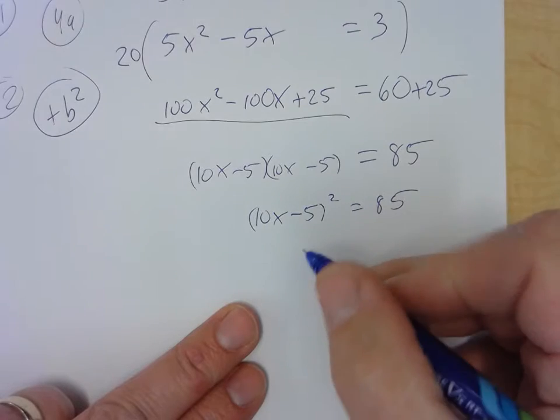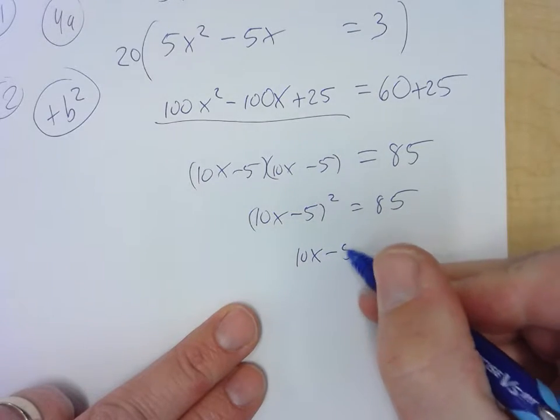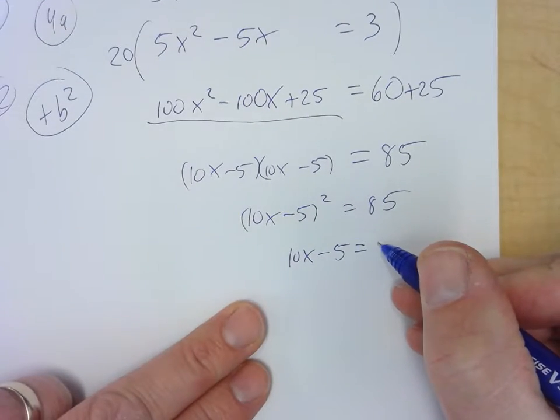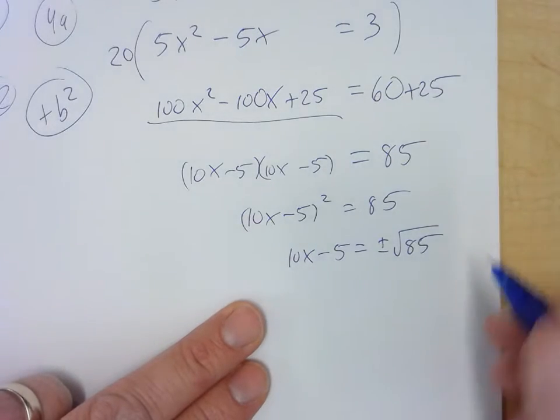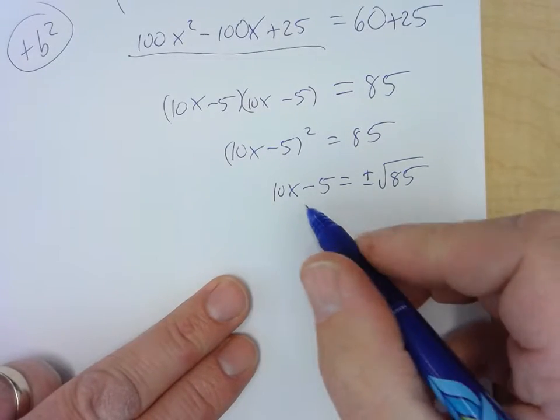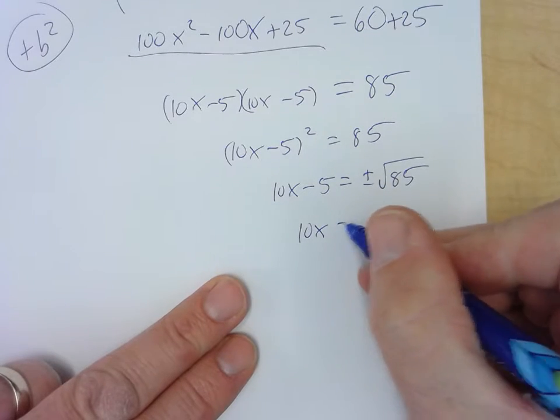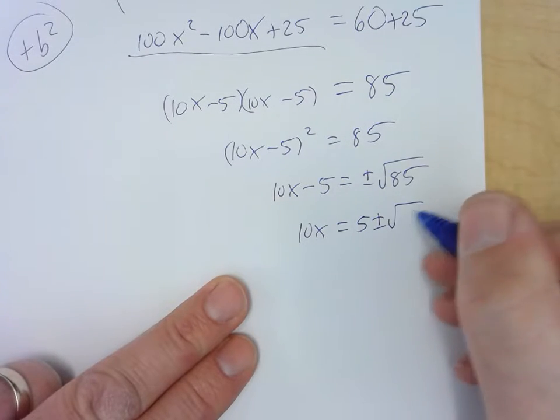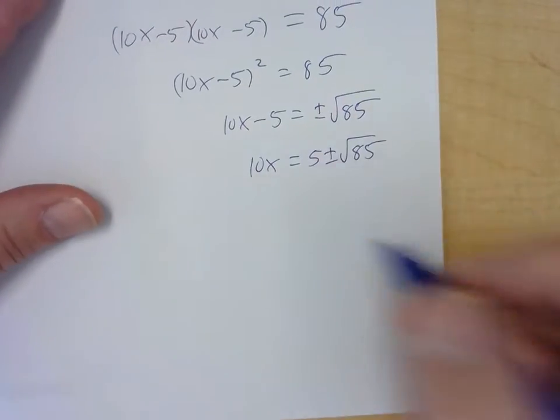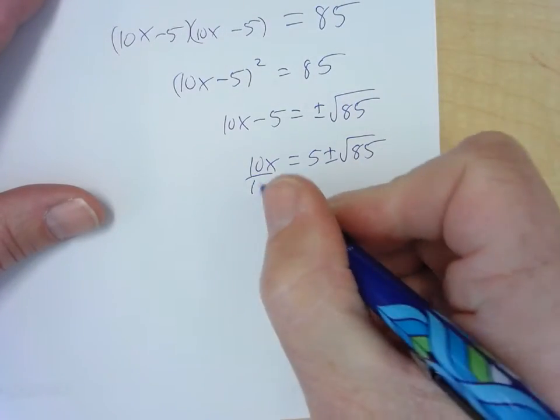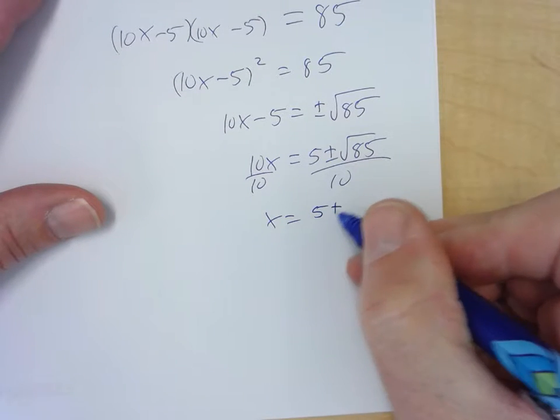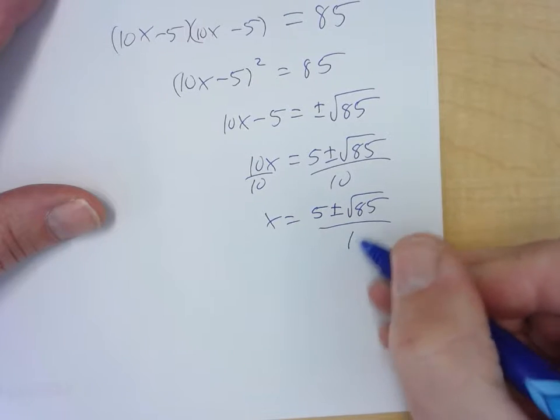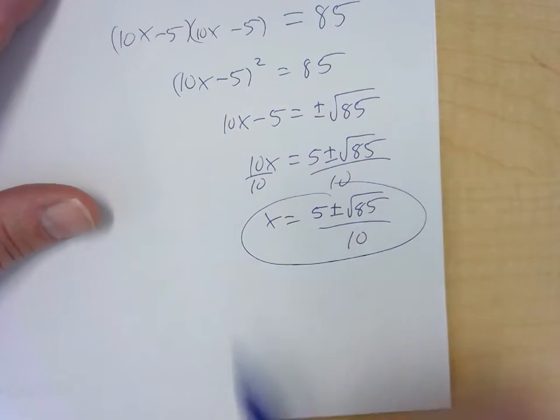And then we take the square root of each side. So we get 10 X minus five is equal to plus or minus square root of 85. And then we add the five over. So 10 X is equal to five plus or minus the square root of 85. And then we divide everything by 10. So we get X is equal to five plus or minus the square root of 85 over 10. So there's the answer.